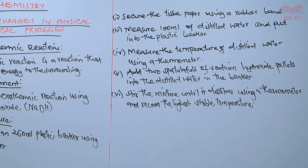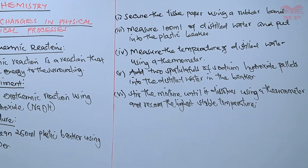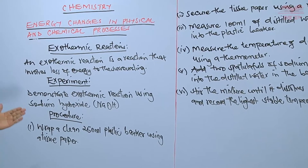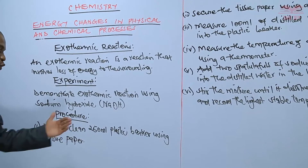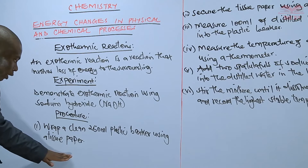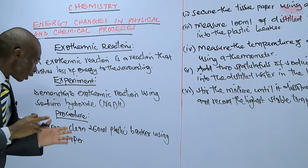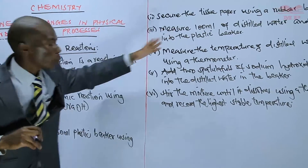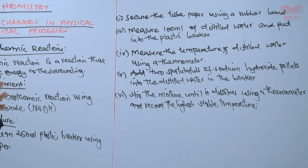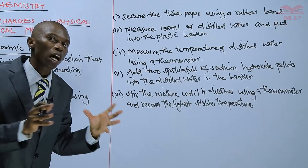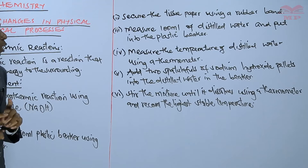So to recap: procedure number one is to wrap a clean 250 ml plastic beaker using a tissue paper. The function of the tissue paper is to prevent gain of energy from the surrounding and loss of energy to the surrounding. Procedure number two is to secure the tissue paper on the outer surface of the plastic beaker using a rubber band, so it does not come off.